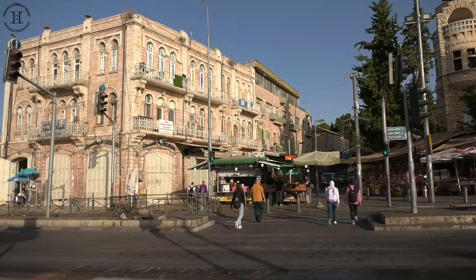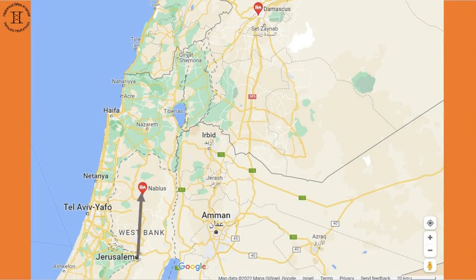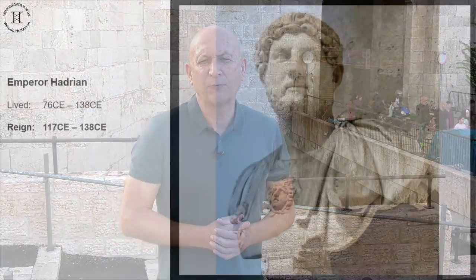The Nablus road initially leads to the northern neighborhoods of Jerusalem, then leads to Ramallah, and from there to Nablus. If continuing to the north, eventually we will reach Damascus. The gate has more names. In Arabic, it is also called Bab el-Amud, meaning gate of the column, following the column that once stood in the gate's plaza and on which a statue of the Roman Emperor Adrian was placed.